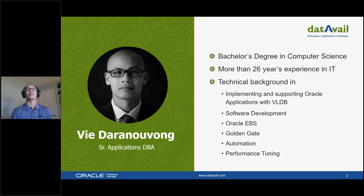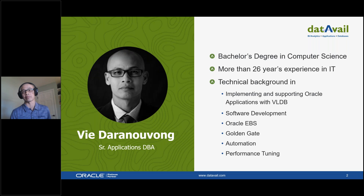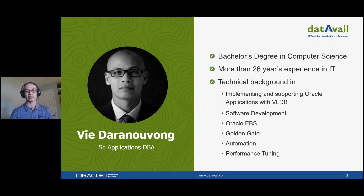A little bit about myself. I started as a developer and DBA in 1994 with a consulting firm. I transitioned to doing full-time DBA, apps DBA in 1996, and have been supporting various aspects of EBS and the database ever since. My specialties include software development, Oracle EBS, GoldenGate, automation, and performance tuning.